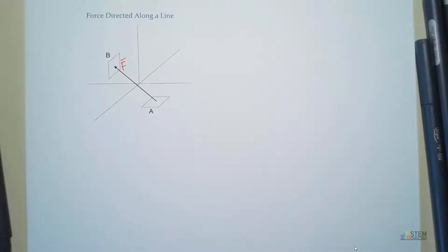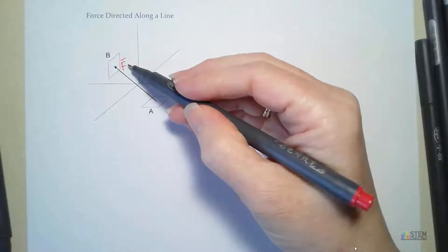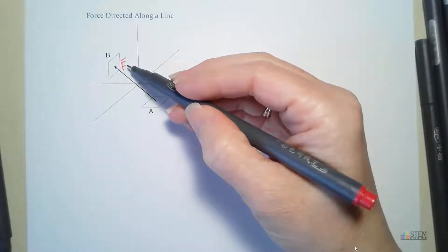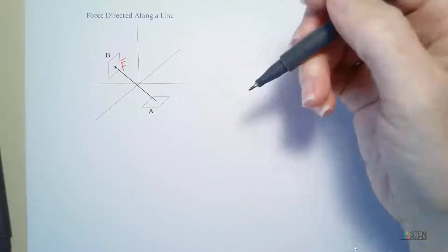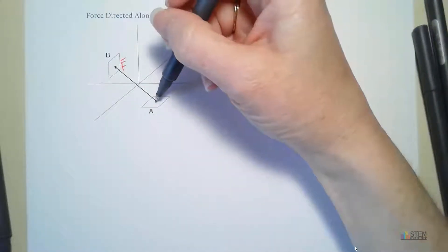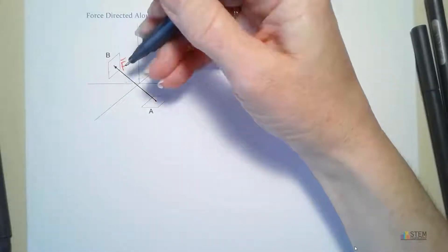Now, what I want to do is I want to be able to figure out how to find this force vector, assuming I'm given the magnitude. Now, what we're going to do is, if you look, we have point A and point B.